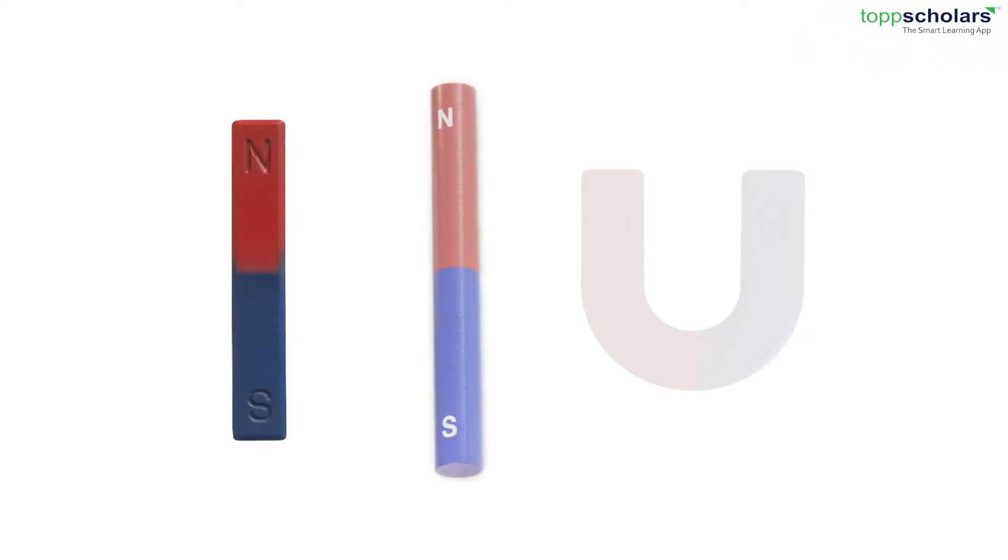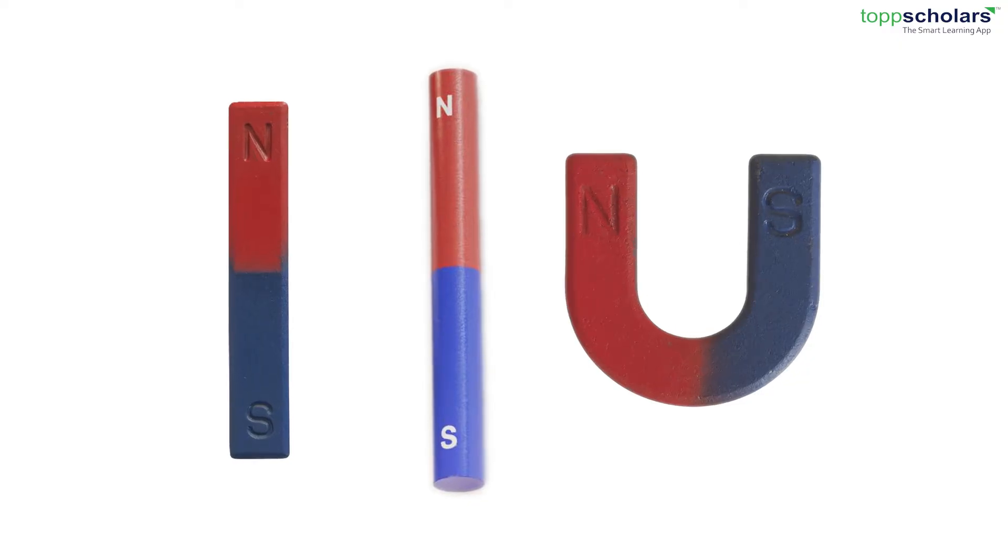Now let's break it down a bit. Poles are always present at the two ends of the magnet, no matter what its shape. So whether it's bar shape, cylindrical shape, U shape, you will always find two poles attached to it.